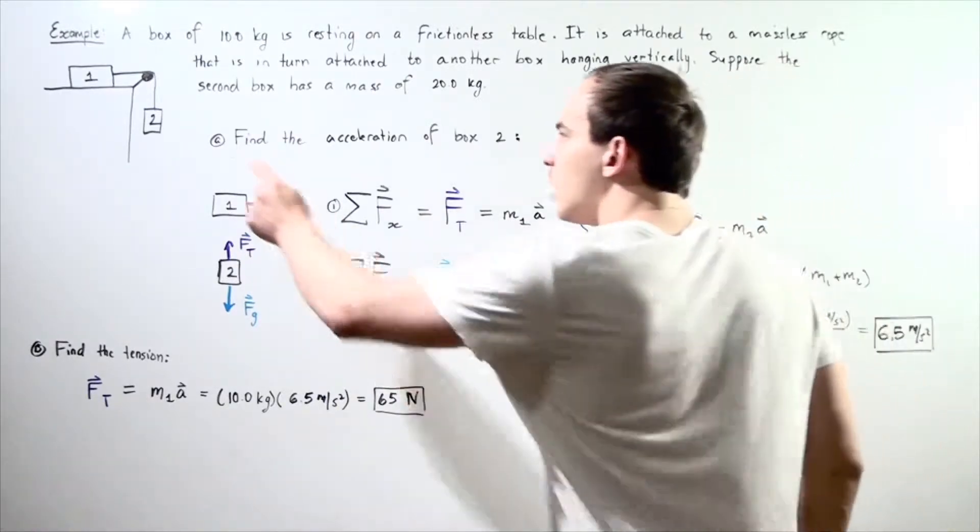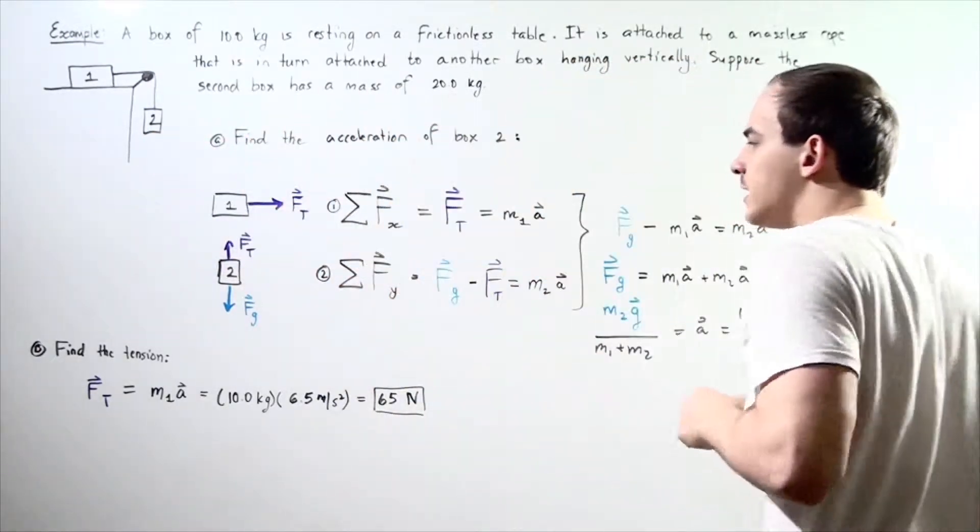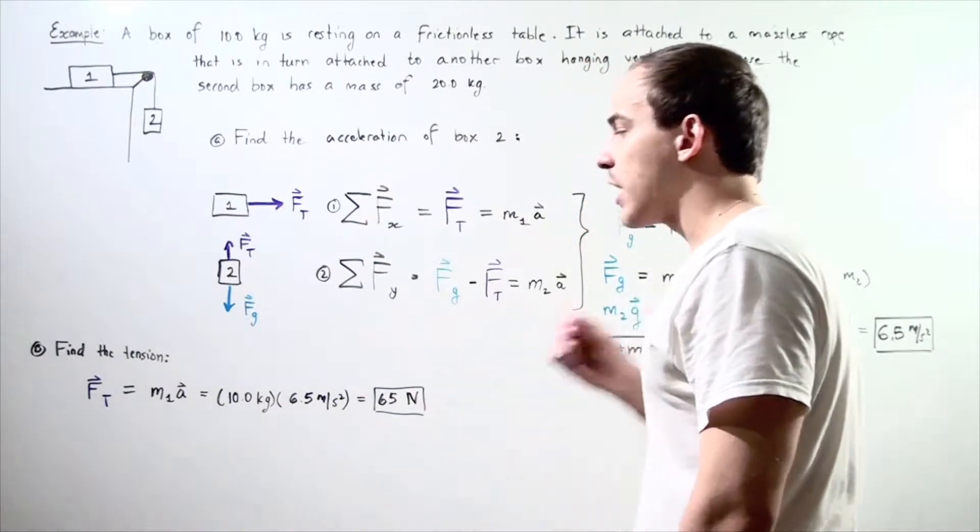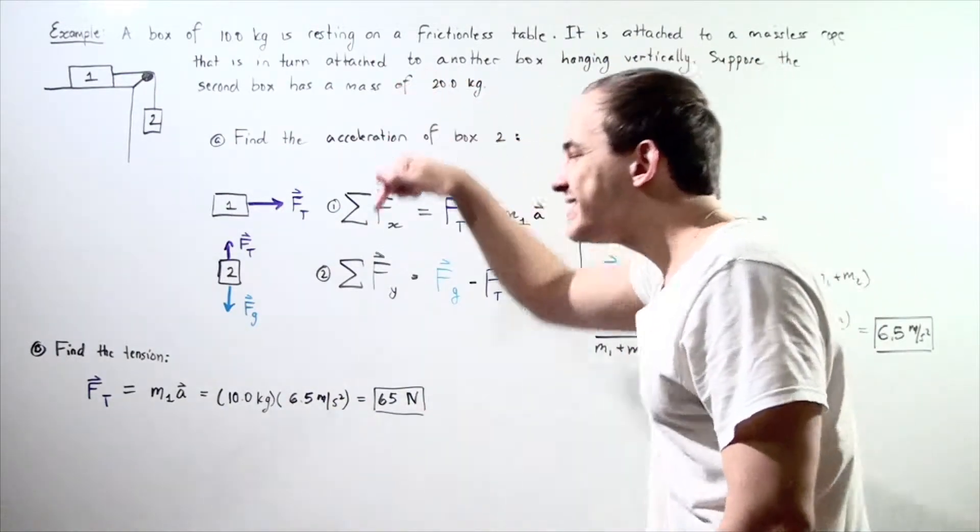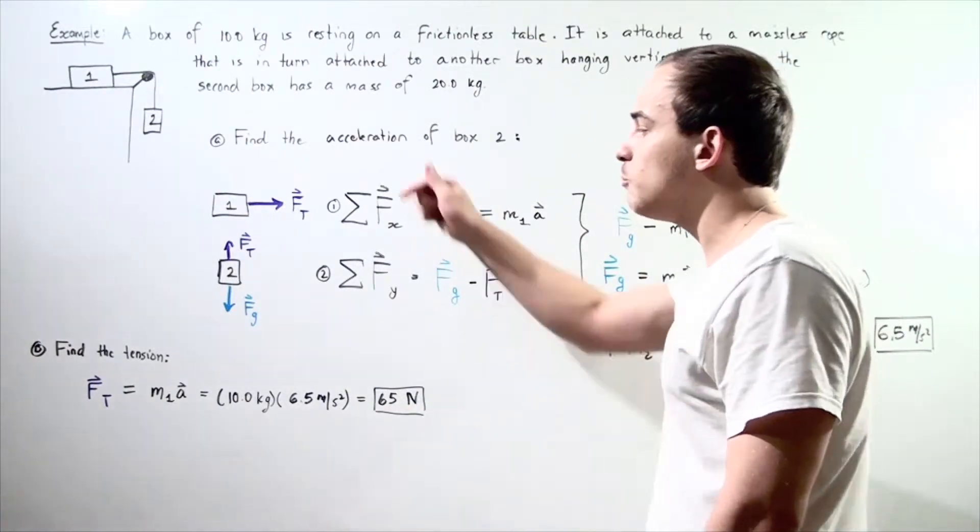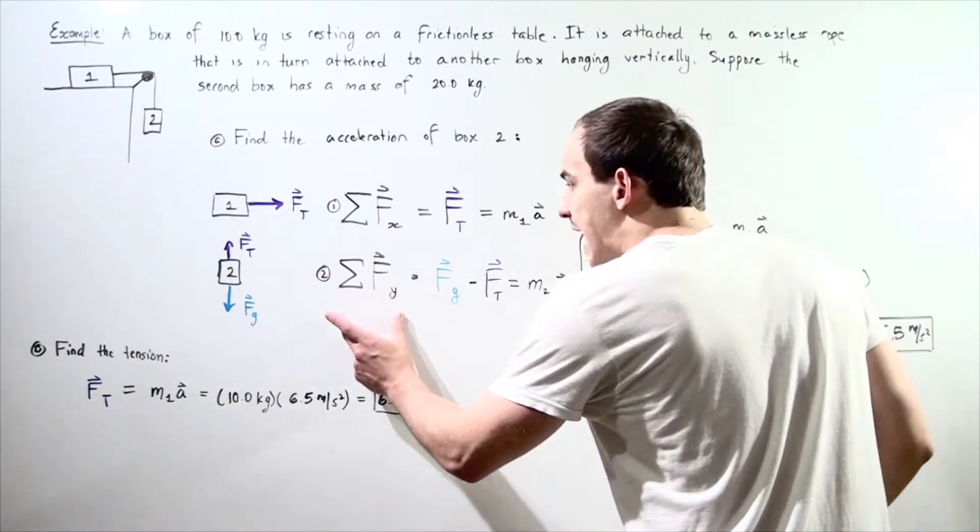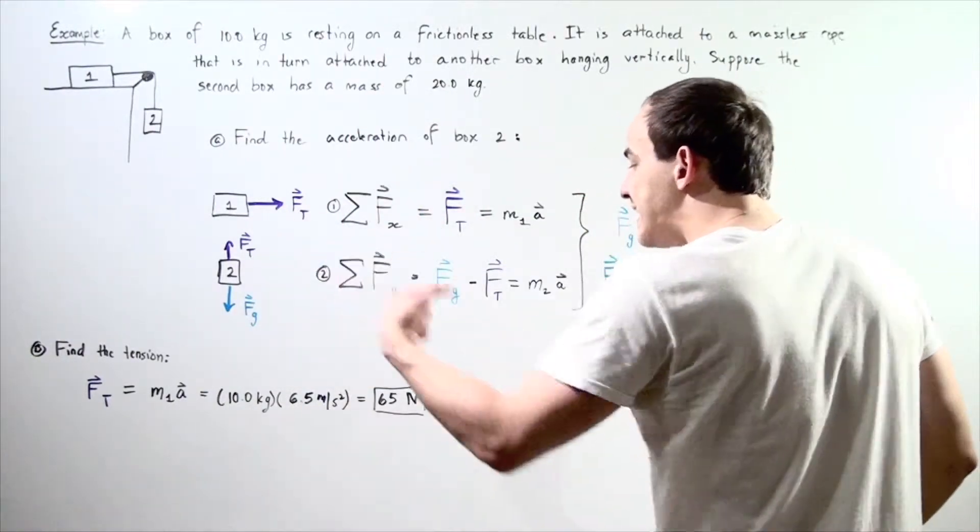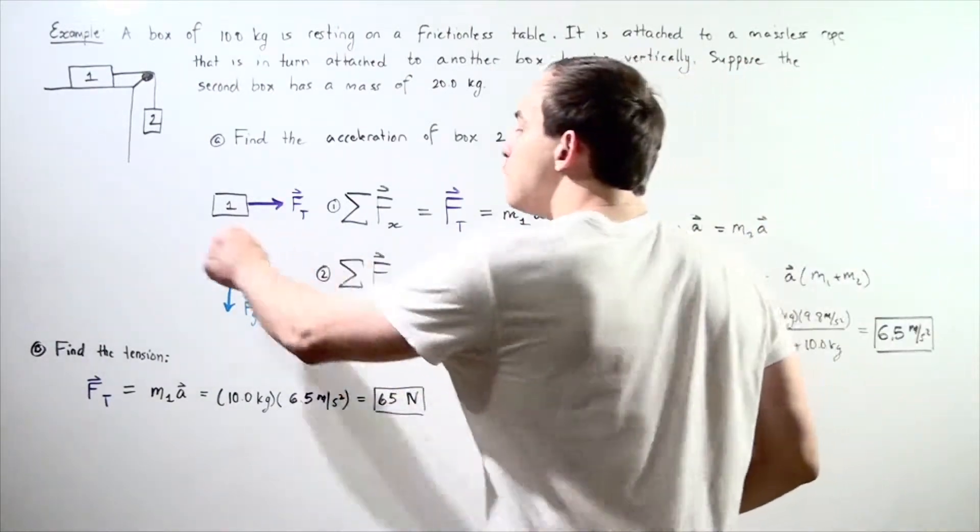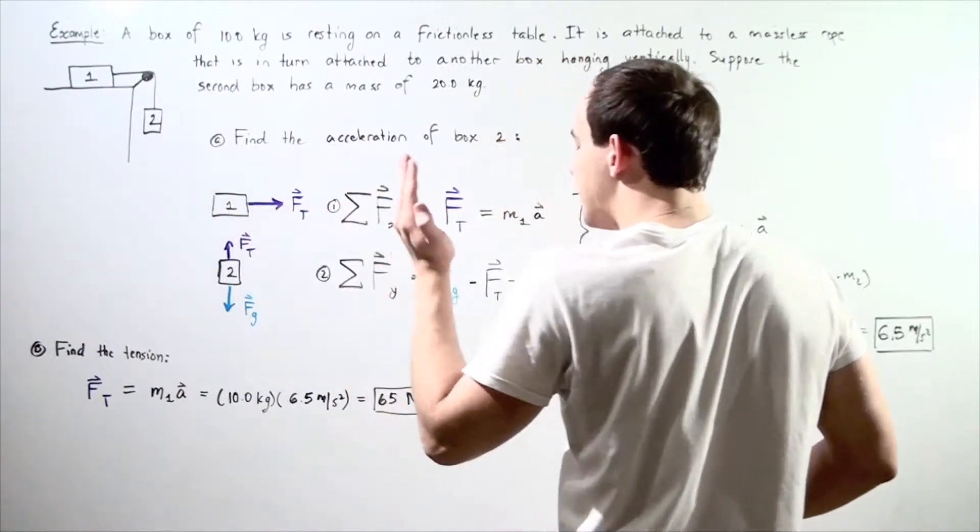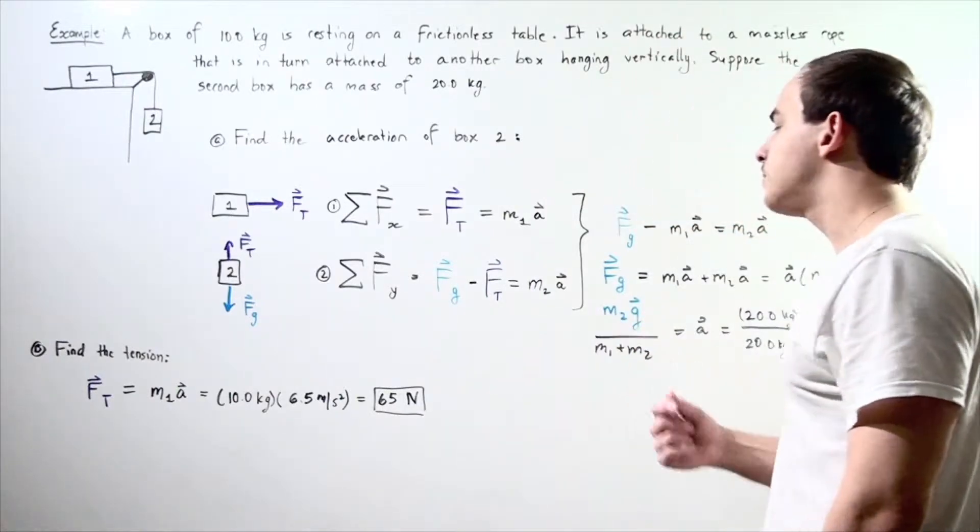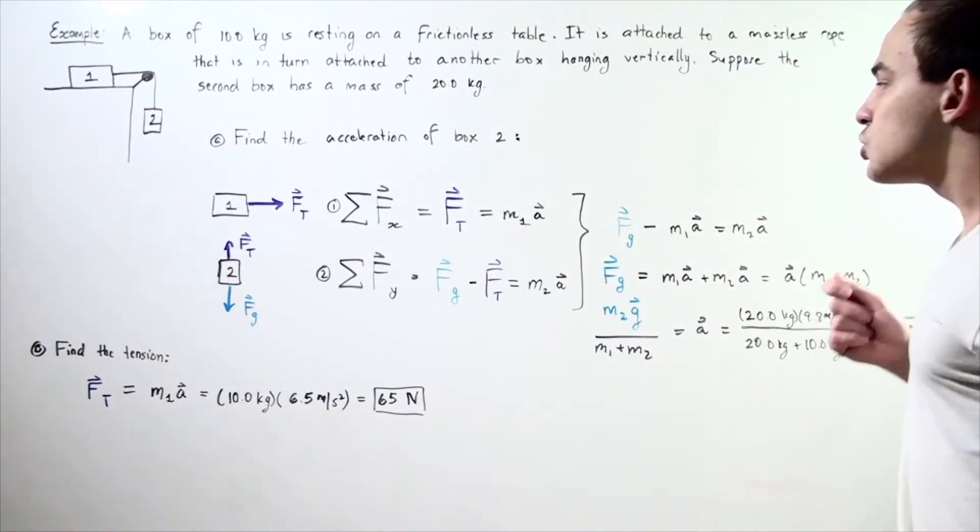For box two, we have two forces acting along the y-direction. Since the object accelerates downward, let's choose downward as positive. The sum of all forces along the y-axis equals the gravitational force on object two minus the tension in the rope, which equals m₂ times a. Notice that we have two equations and two unknowns.